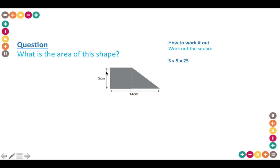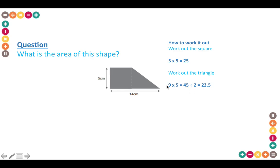Now for the area of the triangle — the height is the same as the square, so 5 centimetres. The total combined width is 14 centimetres but we've already used 5, so 14 minus 5 gives 9 centimetres for the base of the triangle. 9 times 5 equals 45, but because it is a triangle you divide by 2, giving 22.5. Adding 22.5 and 25 gives the total area of 47.5.